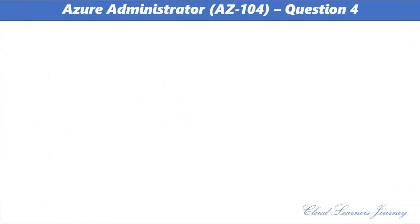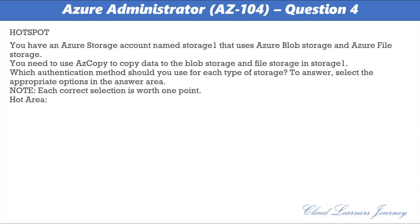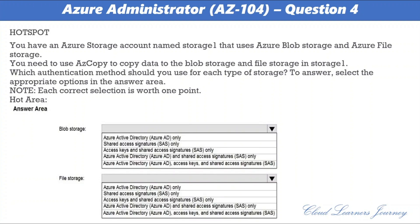Question number 4. You have an Azure storage account named Storage1 that uses Azure Blob storage and Azure file storage. You need to use AzCopy to copy data to the Blob storage and file storage in Storage1. Which authentication method should you use for each type of storage? For Blob storage, the options are: Azure Active Directory only, shared access signature only, or access keys and shared access signature only. Similar options apply for file storage.